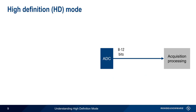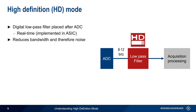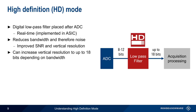One way of avoiding these issues of reduced sample rate and unknown bandwidth reduction in high-resolution mode is using something called high-definition mode. In high-definition mode, a digital low-pass filter is placed directly after the analog-to-digital converter. This filter is implemented in an ASIC, and thus essentially operates in real-time. As with all other filters, this digital filter reduces bandwidth, and thus also reduces the amount of noise, resulting in improved signal-to-noise ratio and improved vertical resolution. The improvement in vertical resolution can be quite substantial, with an effective resolution of up to 18 bits at low bandwidths.